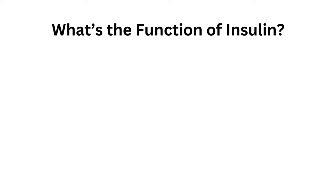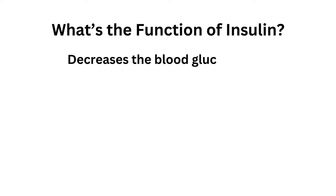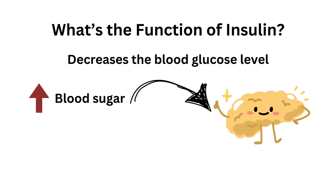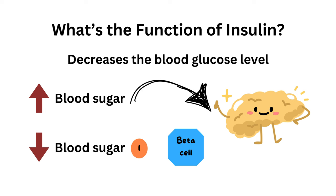So what's the function of insulin? Insulin is the hormone that decreases your body's blood glucose level. When your body's sugar level increases, your body sends a signal to the pancreas. The beta cells of the pancreas, which are sensitive to high blood glucose levels, secrete insulin, which brings the blood glucose level back down to normal.